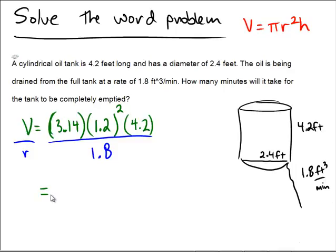So I'm going over the calculator now. I'm just going to type in 3.14 times 1.2 squared times 4.2 divided by 1.8. And if you played along, hopefully you got an answer here of 10.5504, and the units would be minutes.